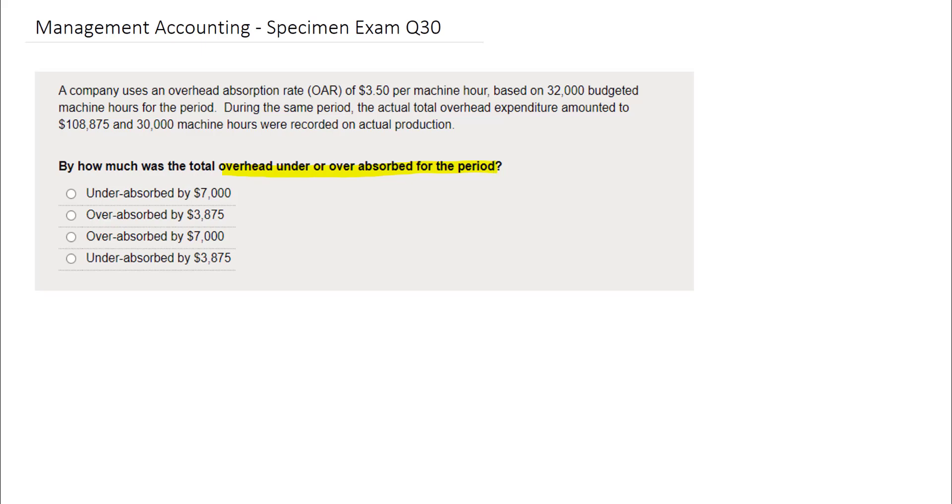The formula to calculate under or over absorption requires a comparison of the actual overheads against the overheads that have been absorbed. The overheads absorbed can be calculated by taking the actual level of activity multiplied by the overhead absorption rate or the OAR.